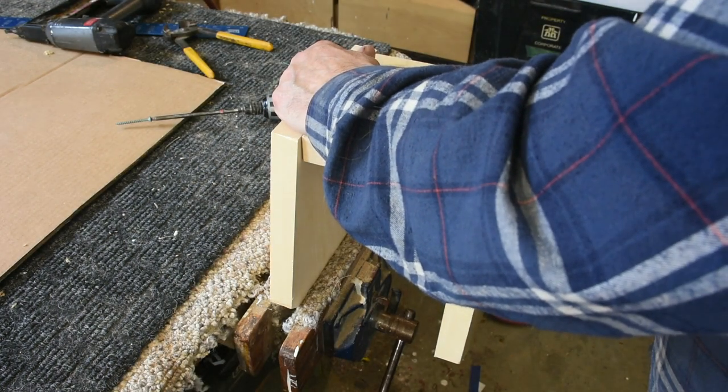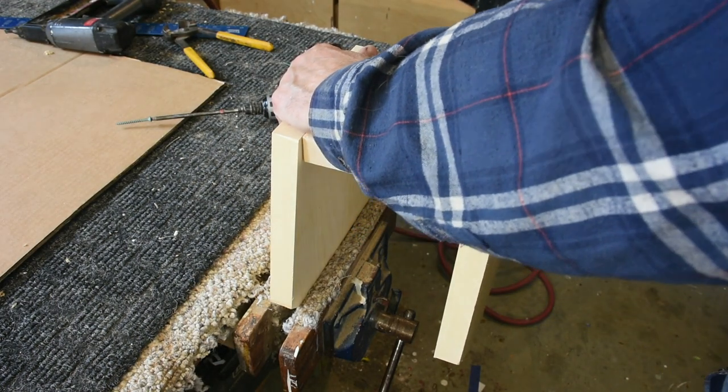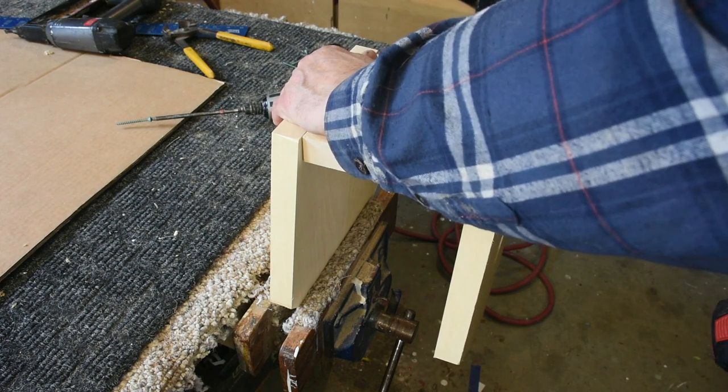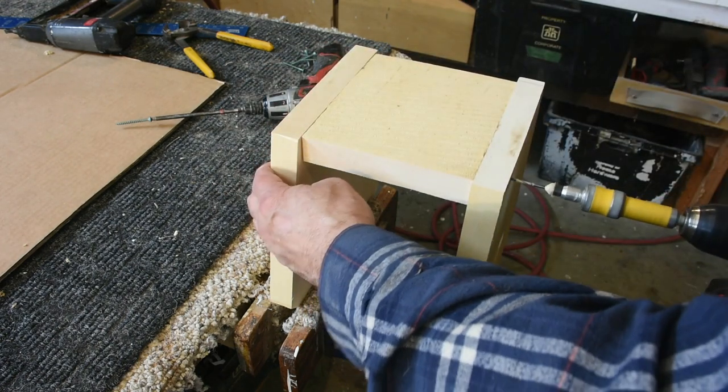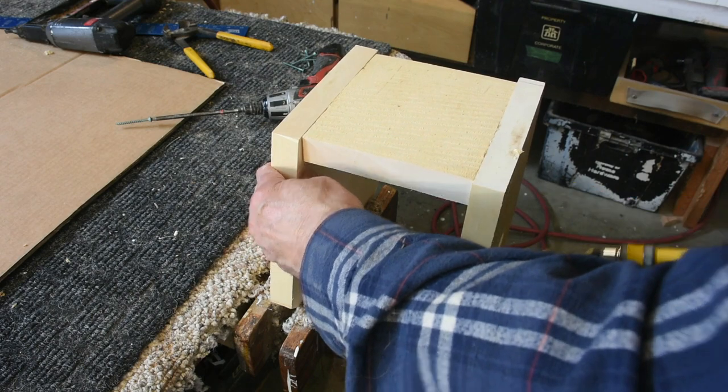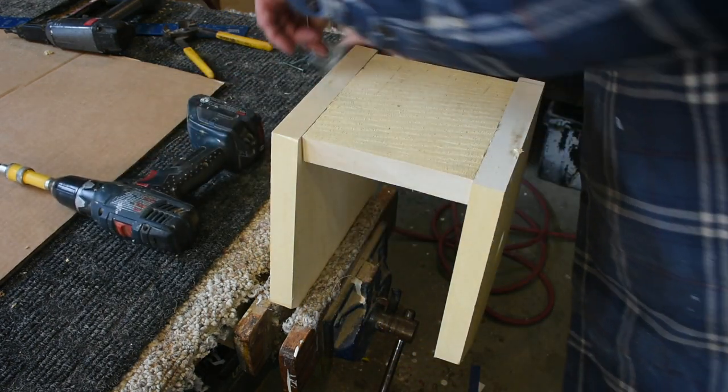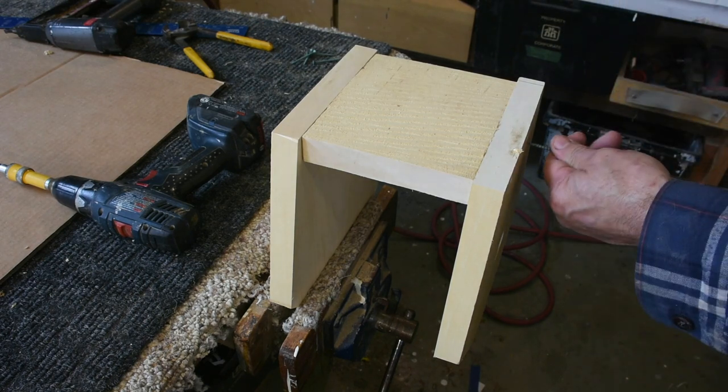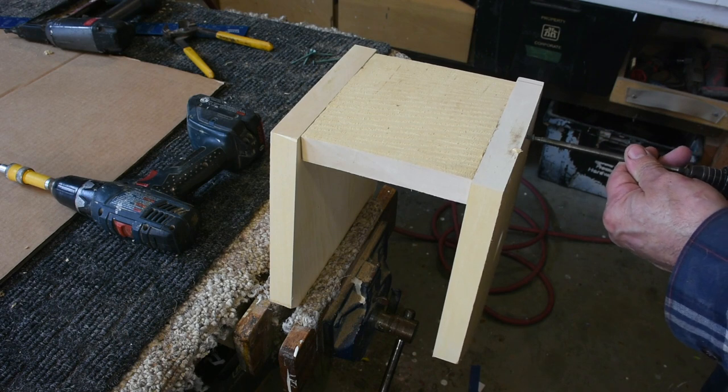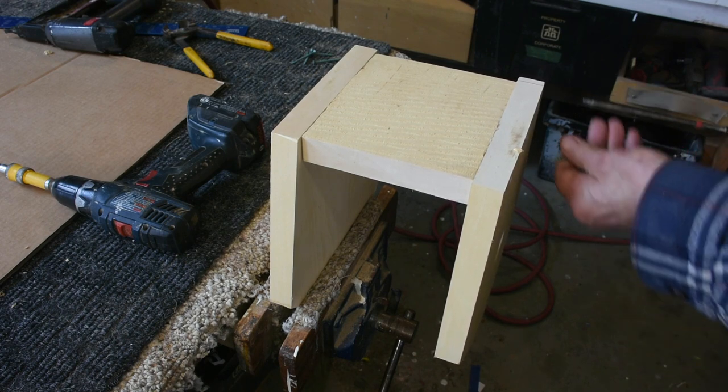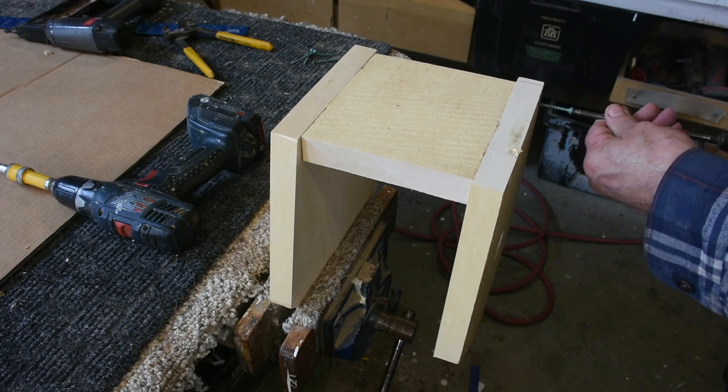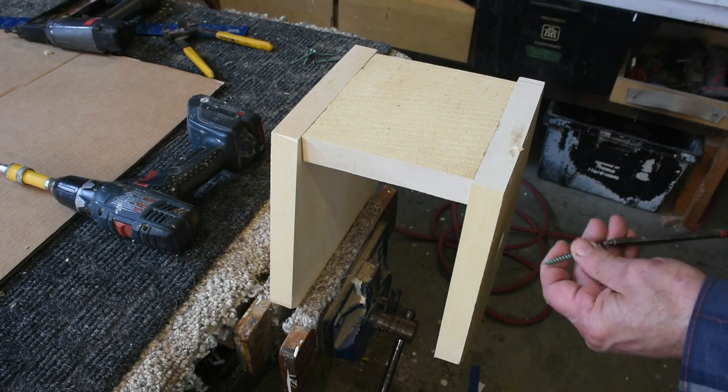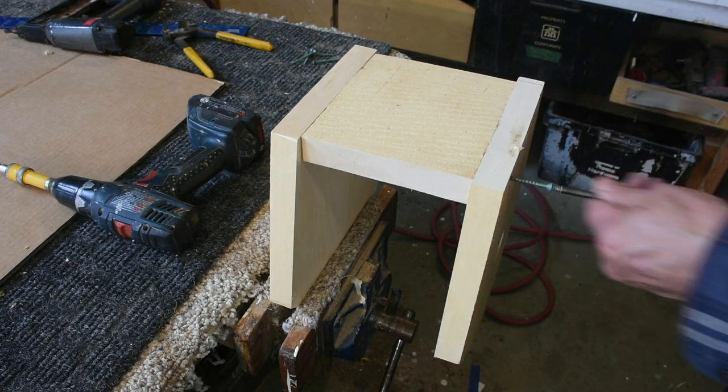Whenever you're putting cedar together like this, it's always good to countersink your holes, and then you're not going to split anything. If you're using one of those impact drills, just make sure that you don't sink the screw in too tight and split the wood - just bring it in snug. Whenever we're building anything, we like using these light-duty screw guns so that they don't pull in too tight.